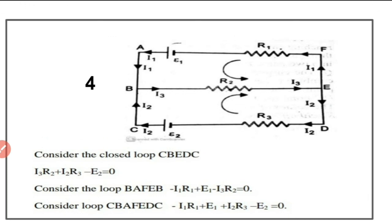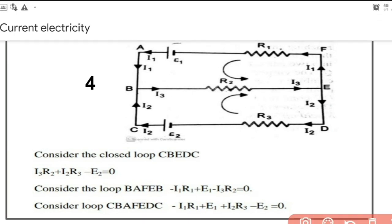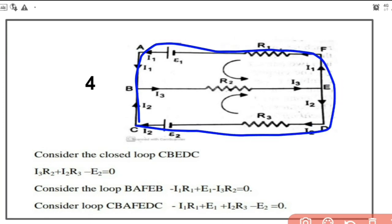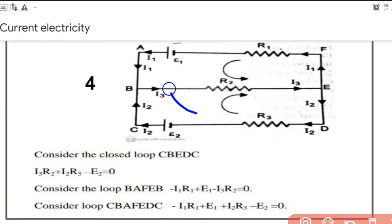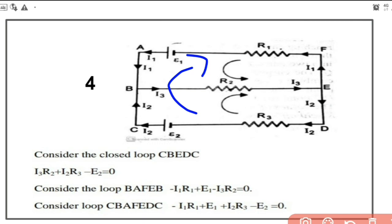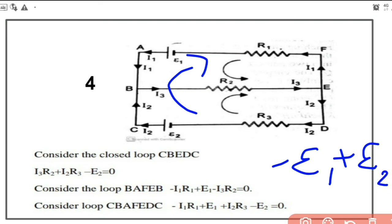Coming to the outer loop C, B, A — a closed outer loop. Starting from C: first R1, current direction opposite to loop, so minus I1R1. Then R3, same direction, so plus I2R3. Cell epsilon 1 is traversed positive to negative (minus epsilon 1), and cell epsilon 2 is traversed negative to positive (plus epsilon 2). So the equation becomes minus I1R1 + I2R3 = epsilon 2 − epsilon 1.